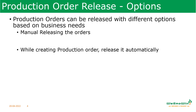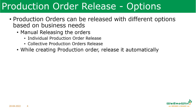What are the different ways to release production orders? Production orders can be released manually or automatically. When we release production orders manually, they can be released individually or collectively. These are the two options. Another option is that while creating a production order, it can be released automatically.